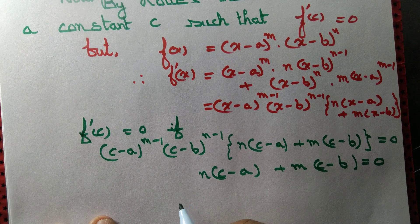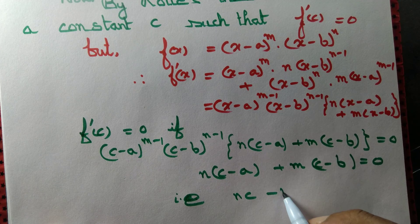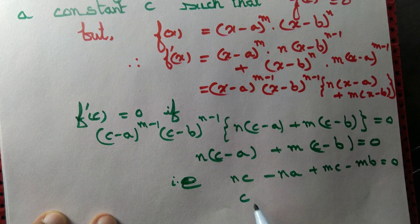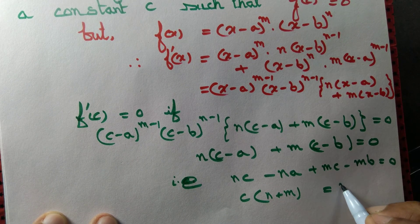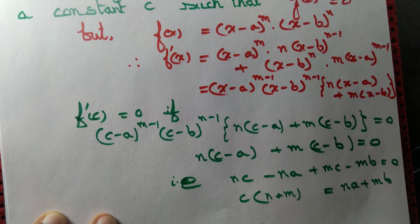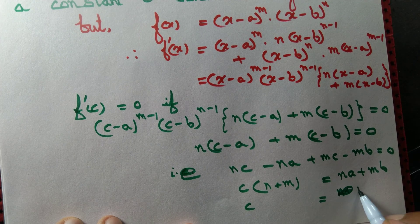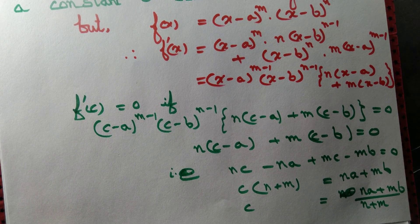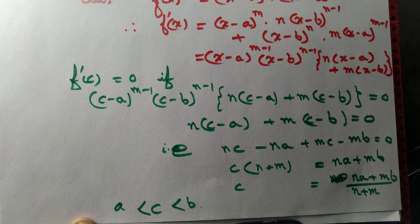So we have only one valid choice: n(c minus a) plus m(c minus b) equals 0. Expanding: nc minus na plus mc minus mb equals 0, giving c(n plus m) equals na plus mb. Therefore c equals (na plus mb) divided by (n plus m). This c is strictly greater than a and less than b, so we have found the required constant c such that f'(c) equals 0 and c is in (a, b).